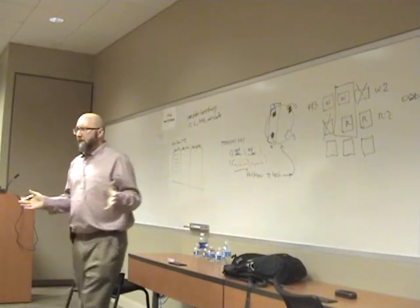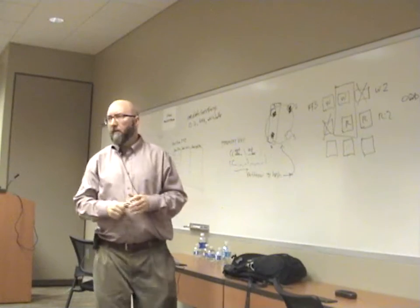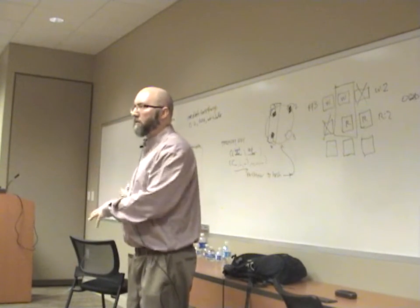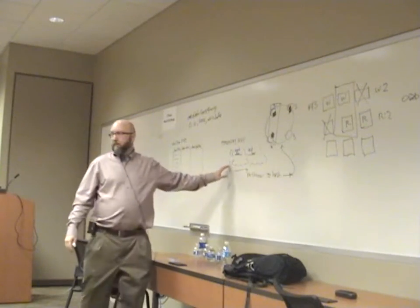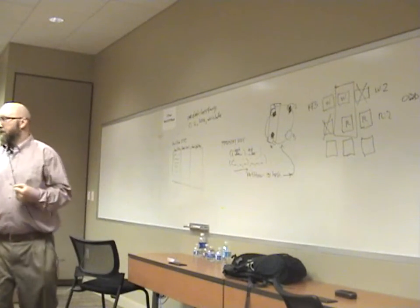With Thrift they were kind of one and the same and that made things complicated because people had to think about the storage. Now with CQL and having the ability to control things through the primary key structure, you don't have to think about the storage level.